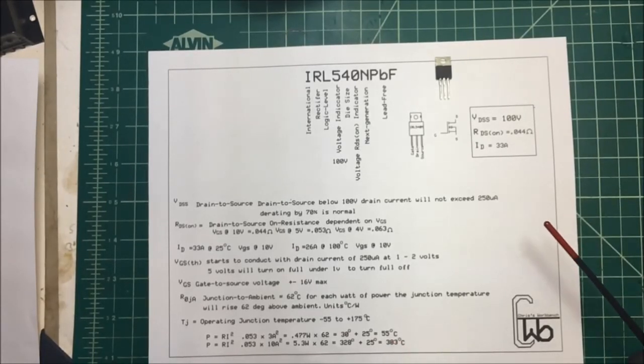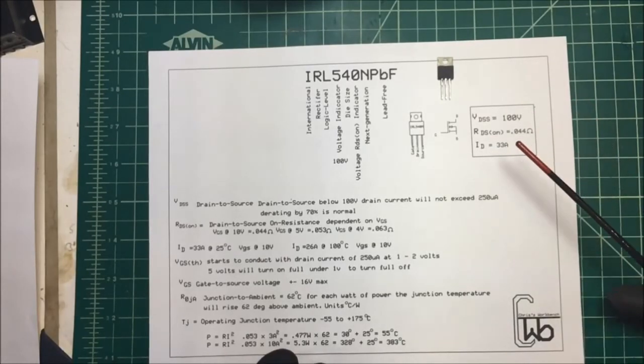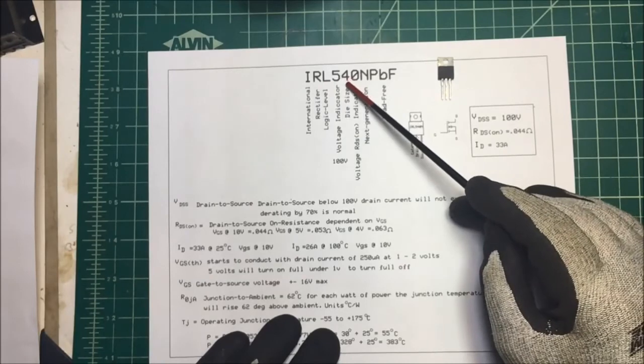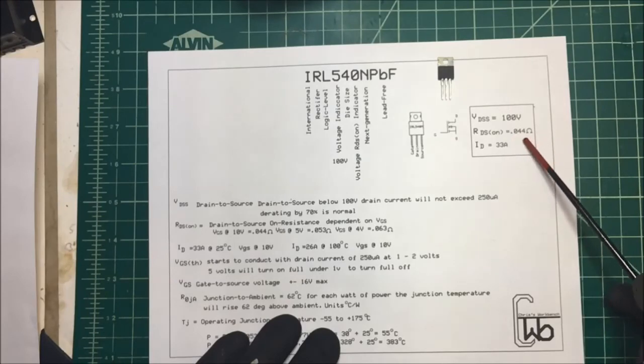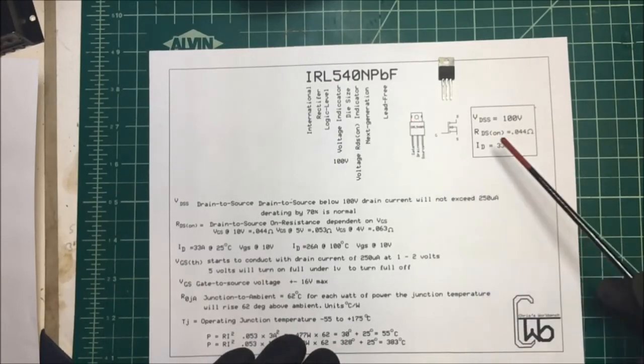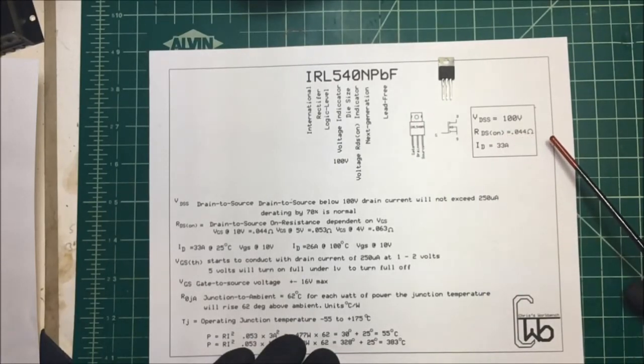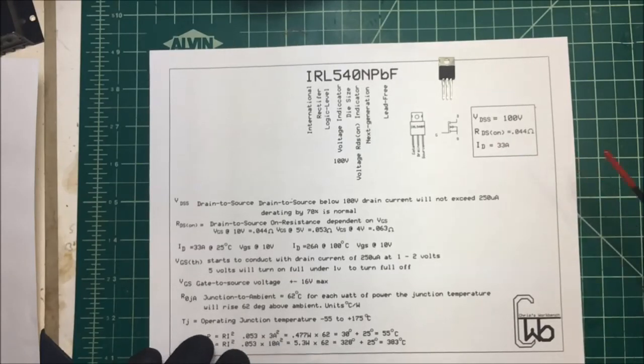But for my 24 volts at three amps, this unit's going to work out just fine. Now they make other units, I think it's an IRL Z44, and the on-resistance is I think 0.022 ohms. They even make better units than that. So this unit isn't the best unit for dissipating the heat there, but that's what I've got. And at three amps it's going to work fine. We're never going to get up to 33 amps. So anyway, that's just a quick way to check out a MOSFET, and this one's going to work fine for me. Thank you.